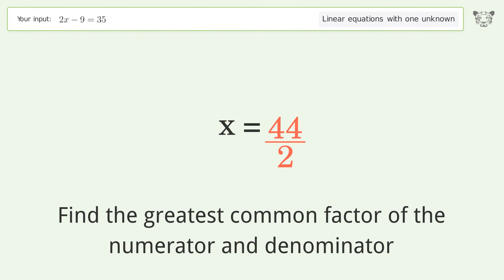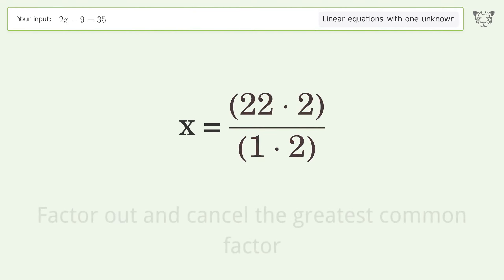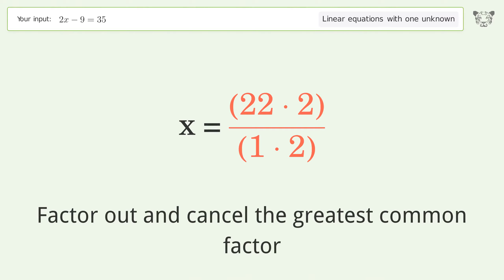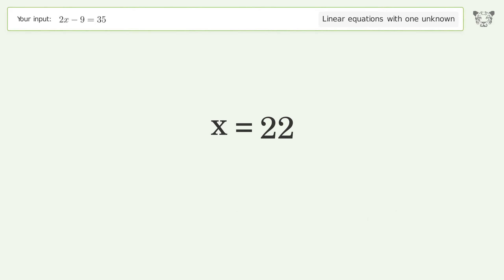Find the greatest common factor of the numerator and denominator. Factor out and cancel the greatest common factor. And so the final result is x equals 22.